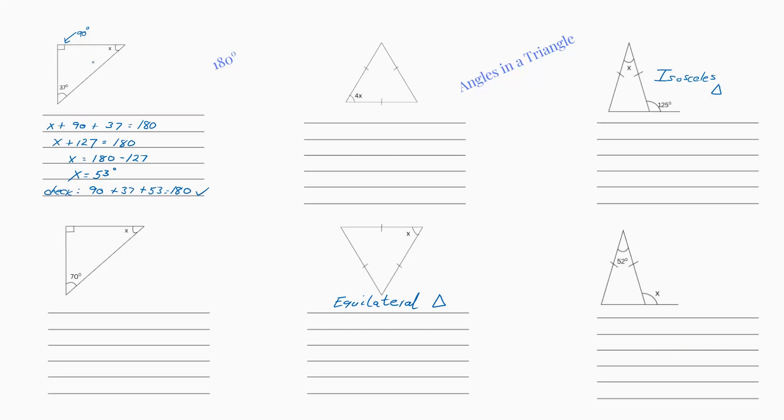So we need to find x. That's our objective. So we've got x plus 90 plus 37. That's given. And it has to equal 180. So now we can add up our 90 plus 37 and that comes to 127. So now we have x plus 127 equals 180.